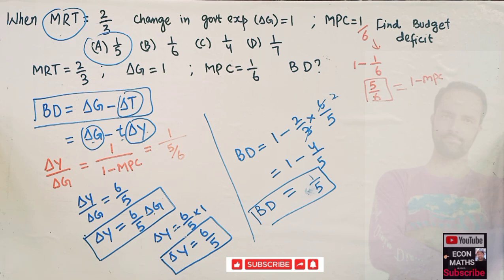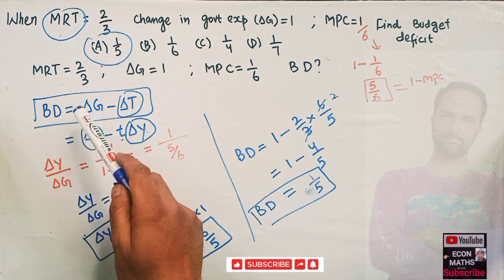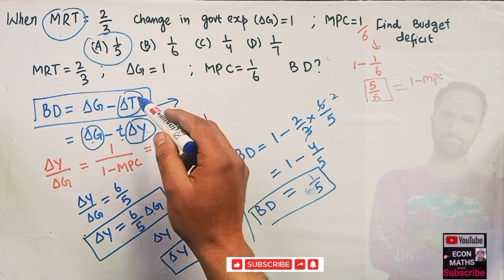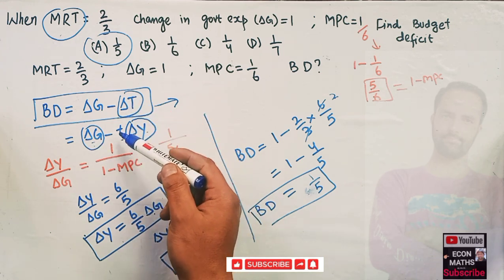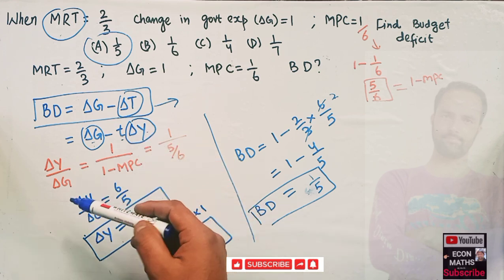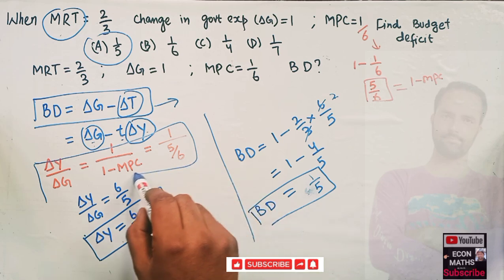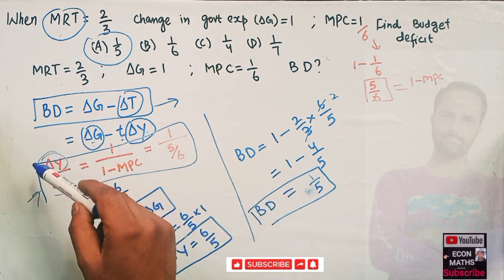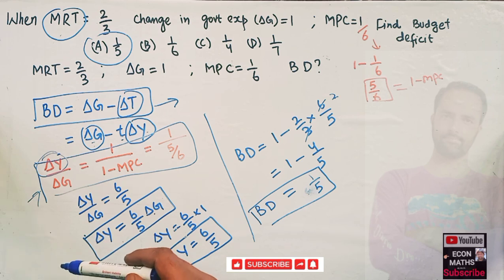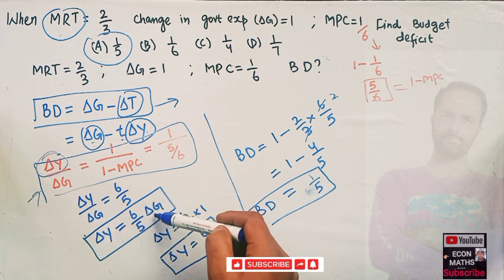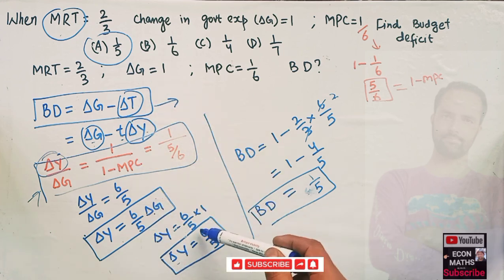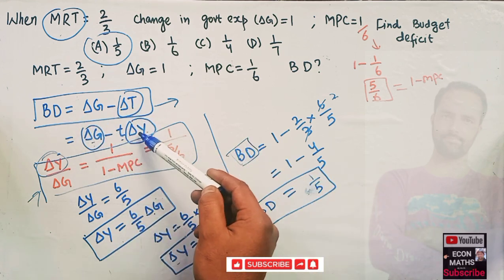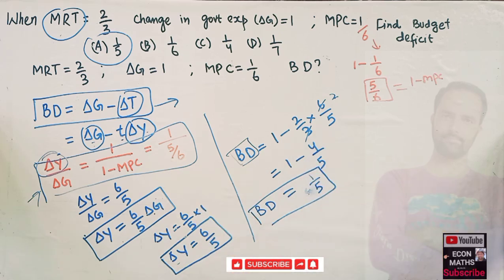To summarize: we know budget deficit = ΔG − ΔT. We replace ΔT with marginal rate of tax times change in income. We use the government expenditure multiplier to find ΔY = 6/5 × ΔG. Since ΔG = 1, ΔY = 6/5. Substituting into the budget deficit formula gives us 1/5. Thank you.